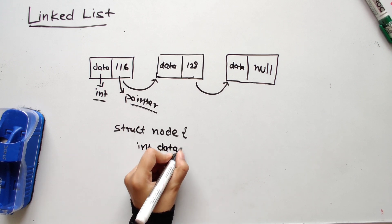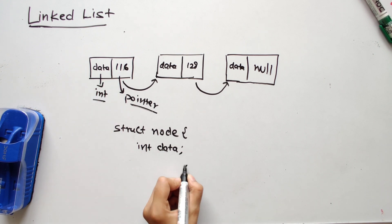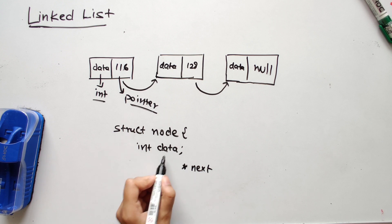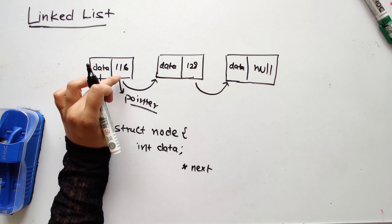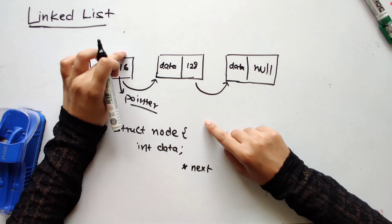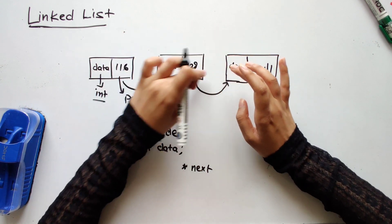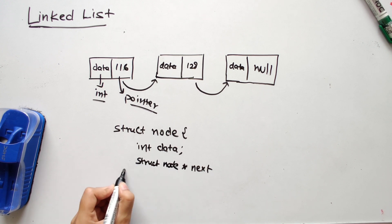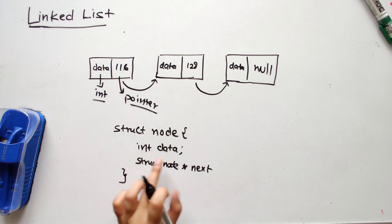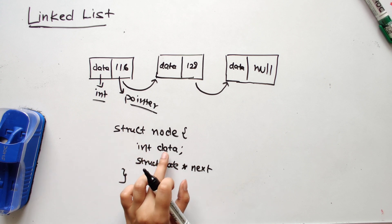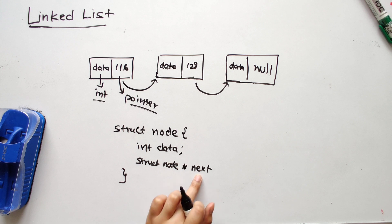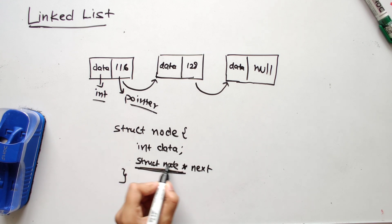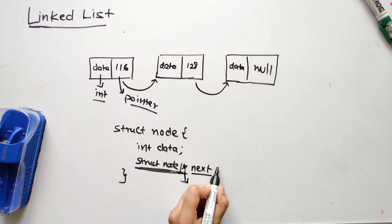Inside the struct, the first field is `int data` to store our integer value. The second field is a pointer to the next node, named `next`. The data type for `next` is `struct node*` — it stores the address of another node of the same type. The star specifies it's a pointer, and `struct node` is the data type. So every node stores an integer as data and a pointer to the next node.